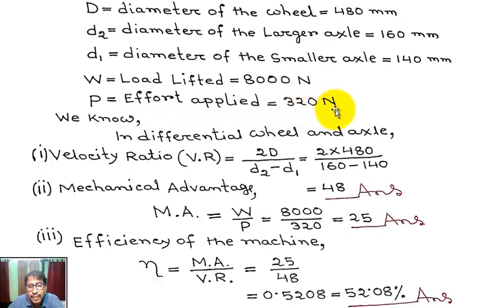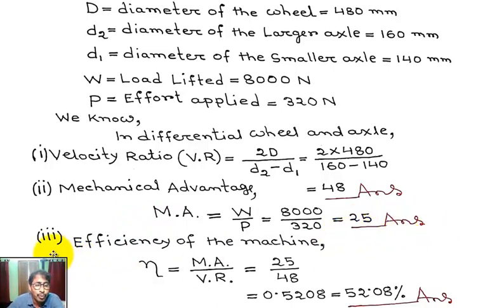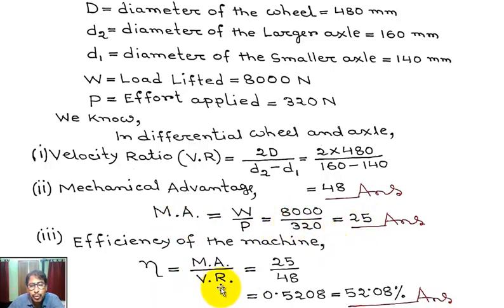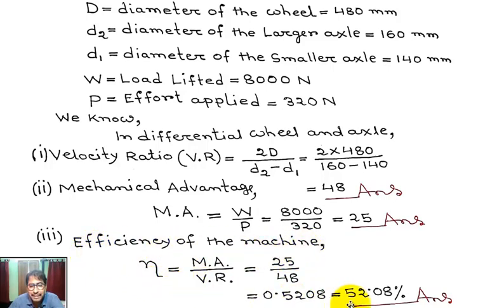Putting in the values: VR equals 2 times 480 divided by (160 minus 140) equals 48. Mechanical advantage MA equals W divided by P equals 8,000 divided by 320 equals 25. MA has no unit. Efficiency of the machine: eta equals MA divided by VR equals 25 divided by 48 equals 0.5208, which is 52.08 percent.